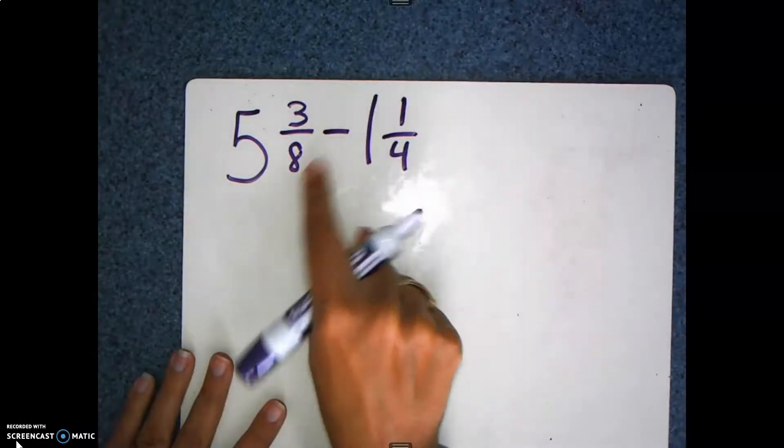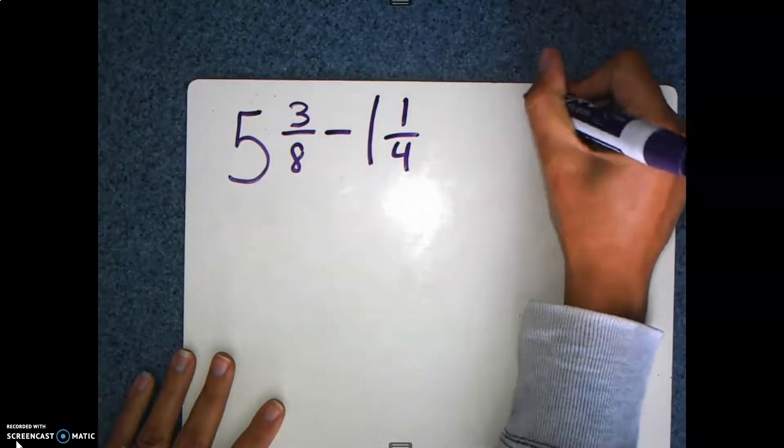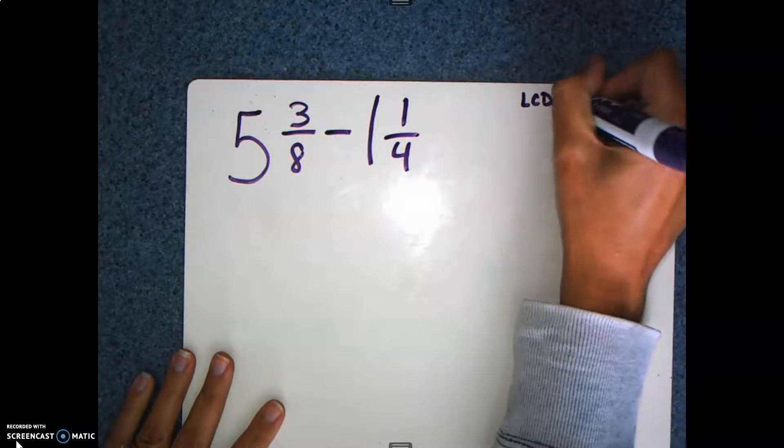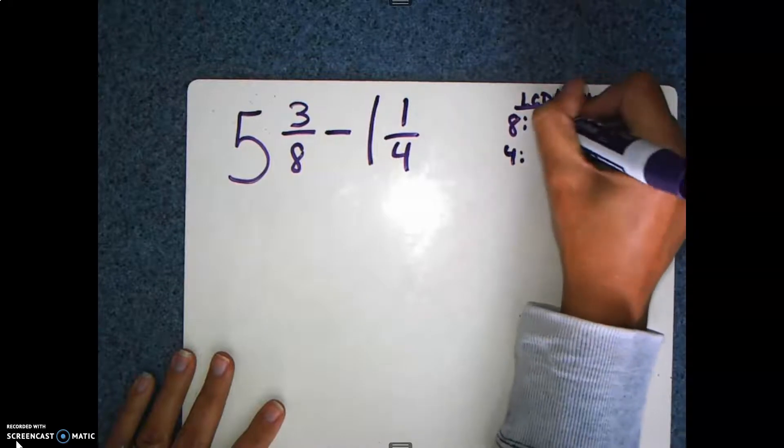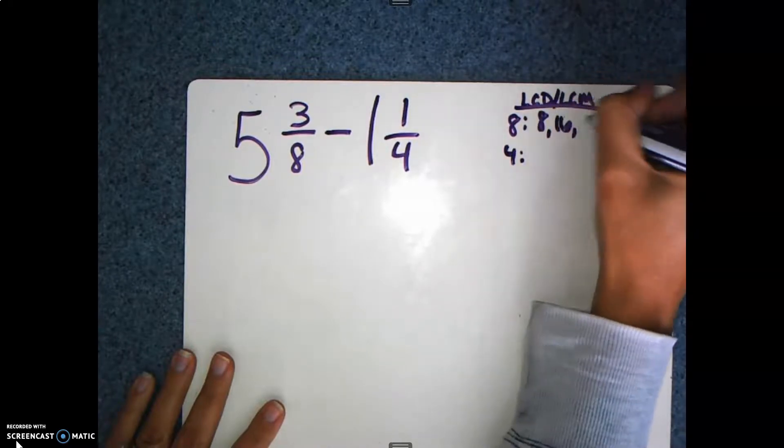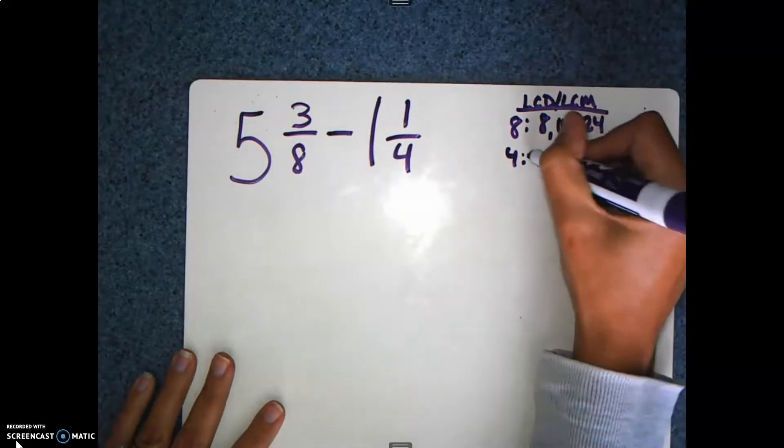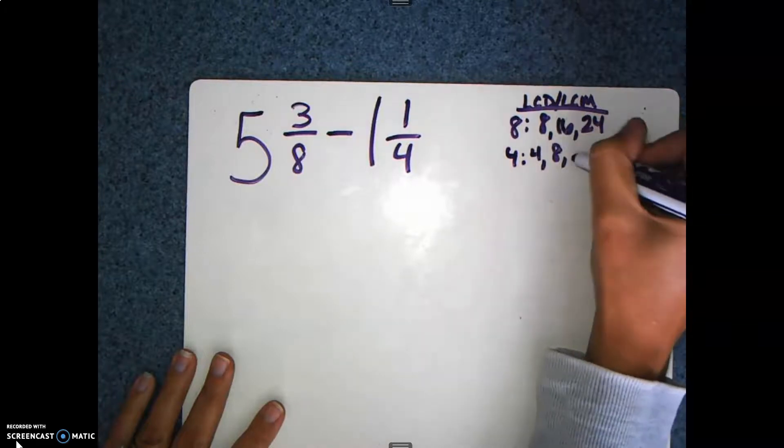5⅜ minus 1¼. So now instead of adding, we are subtracting. Still do the same step. Still looking for my lowest common denominator, lowest common multiple of 8 and 4. And skip counting: 8, 16, and 24. Skip count 4: 8, and 12.